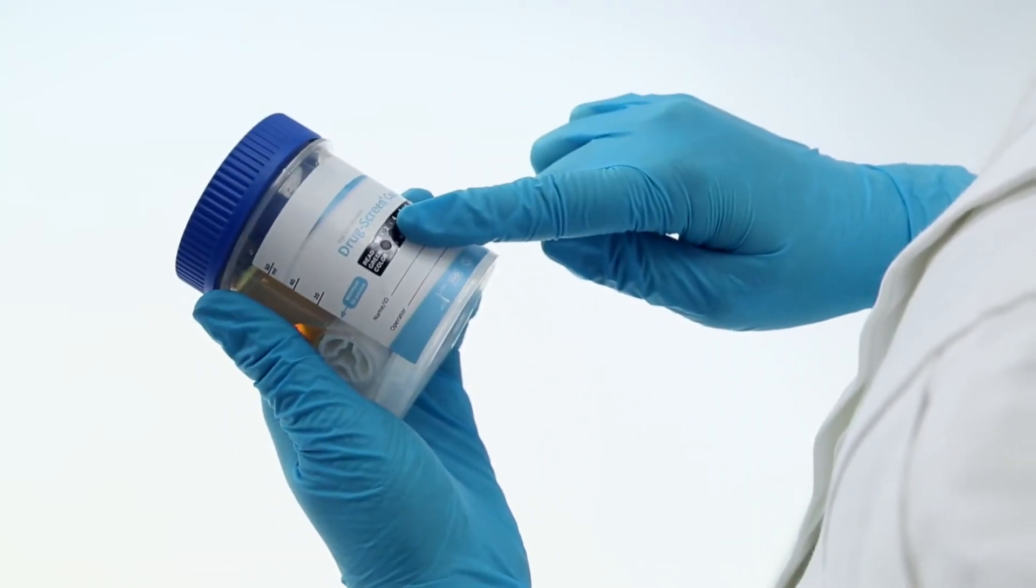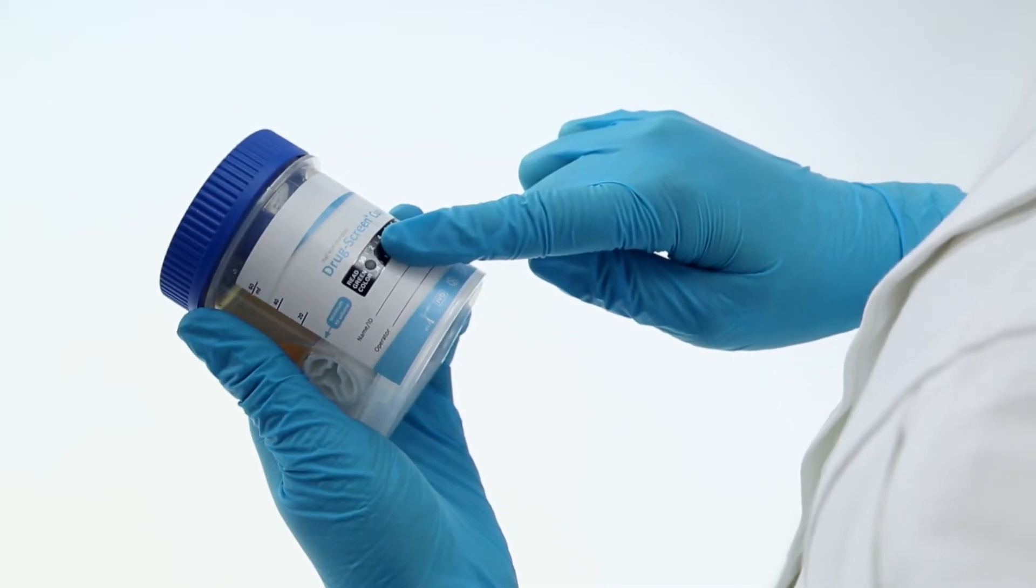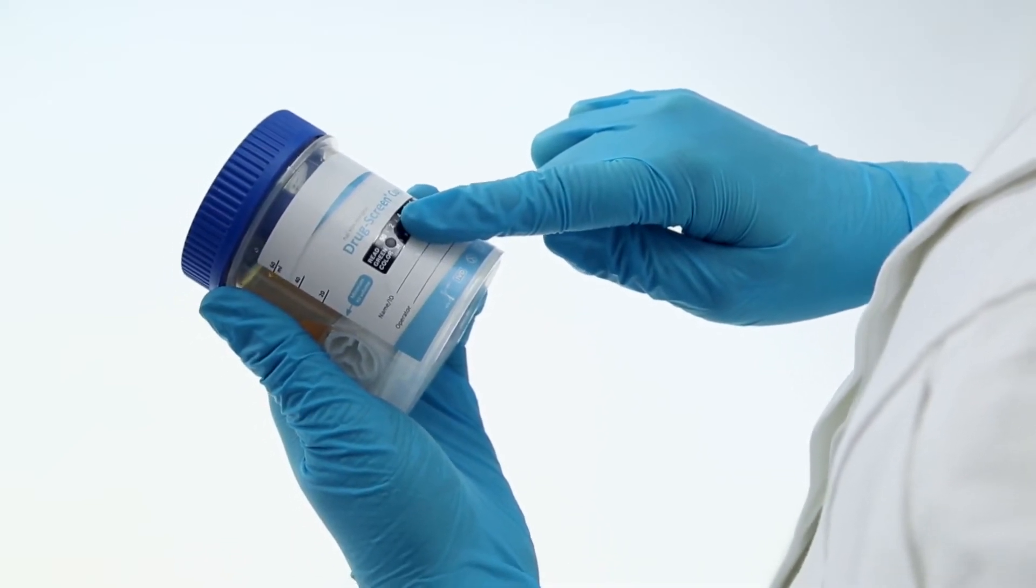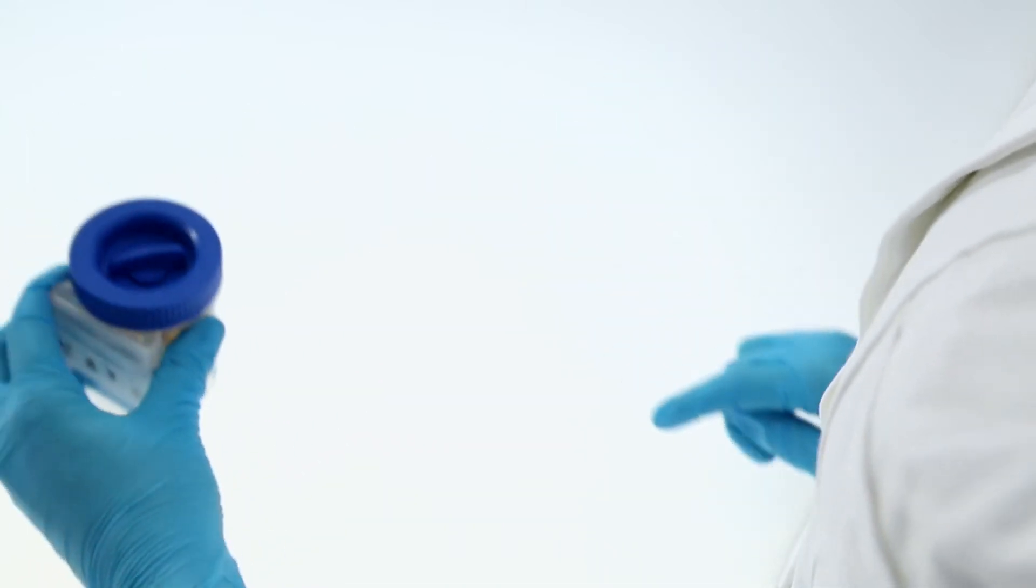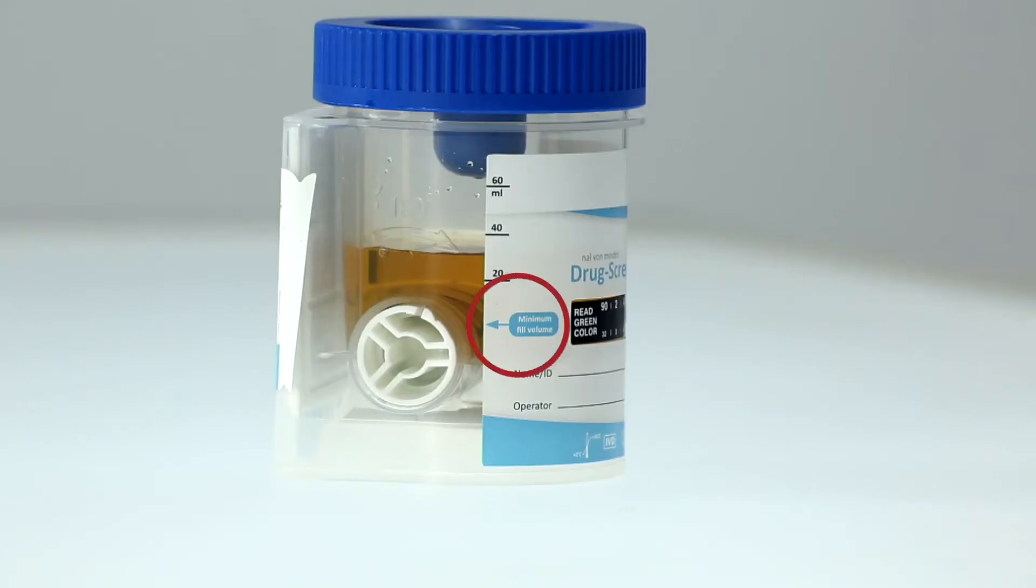Temperature strips integrated into each test indicate where the samples are fresh, that is 32 to 38 degrees Celsius or 90 to 100 degrees Fahrenheit. The minimum fill volume is also marked on the test, but readings are most reliable when the sample volume exceeds 20 milliliters.